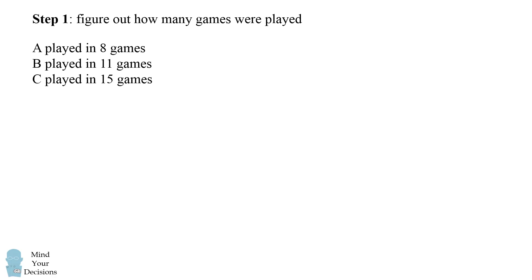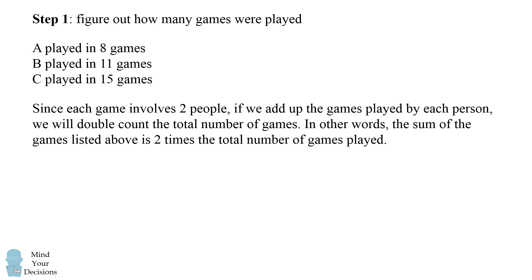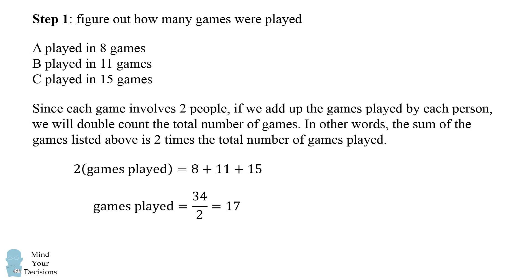Let's start out with the number of games each person played. The first step is to figure out how many games were played in total. Since each game involves two people, if we add up the games played by each person, we will double count the total number of games. So two times the total number of games is equal to 8 plus 11 plus 15. We can solve that the number of games played is one half of 34, which is equal to 17.